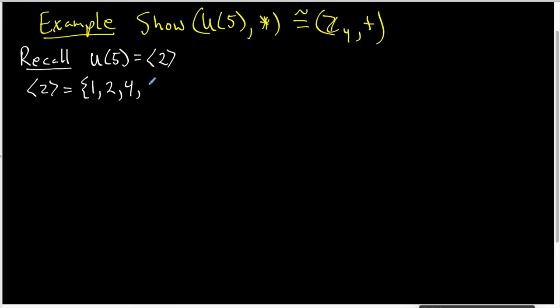And 2 cubed is 8, but we're doing our multiplication mod 5, which is 3. And then 2 times 3 is 1, so we have everybody. So that is how we're going to get the elements of U5 written.